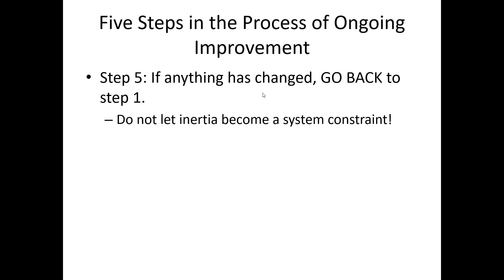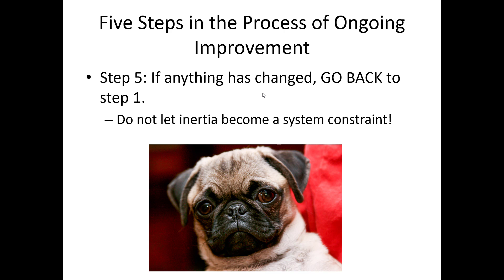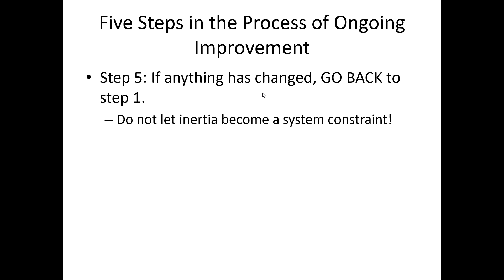Lastly, step five: if anything has changed, go back to step one again. It's a process of continual evaluation. There's nothing that says just because you fixed a constraint and made it better, that constraint doesn't shift to something else — just like another critical path can appear in project management. We could improve one process enough that it's no longer the constraint; something else becomes it. So we identify the new constraint, exploit it, subordinate other activities to it, elevate it, then go back to step five and re-evaluate. It's never-ending — a process of continual improvement. Those are the basic steps in the Theory of Constraints.